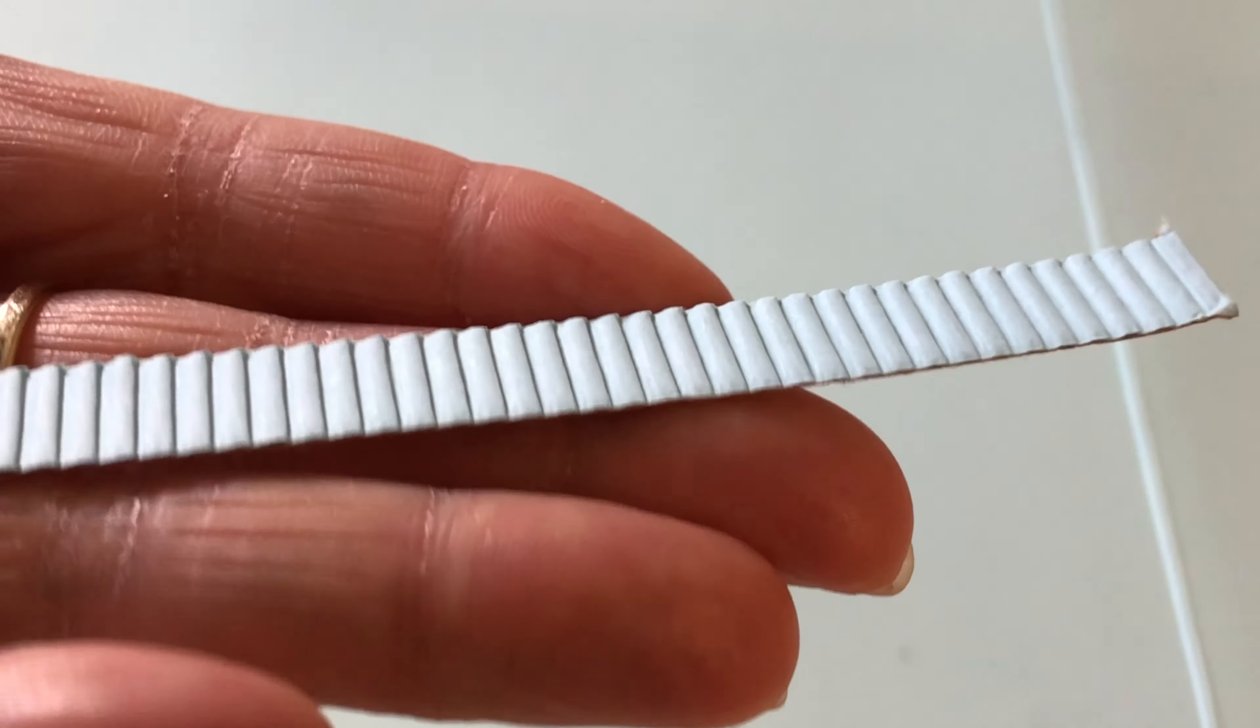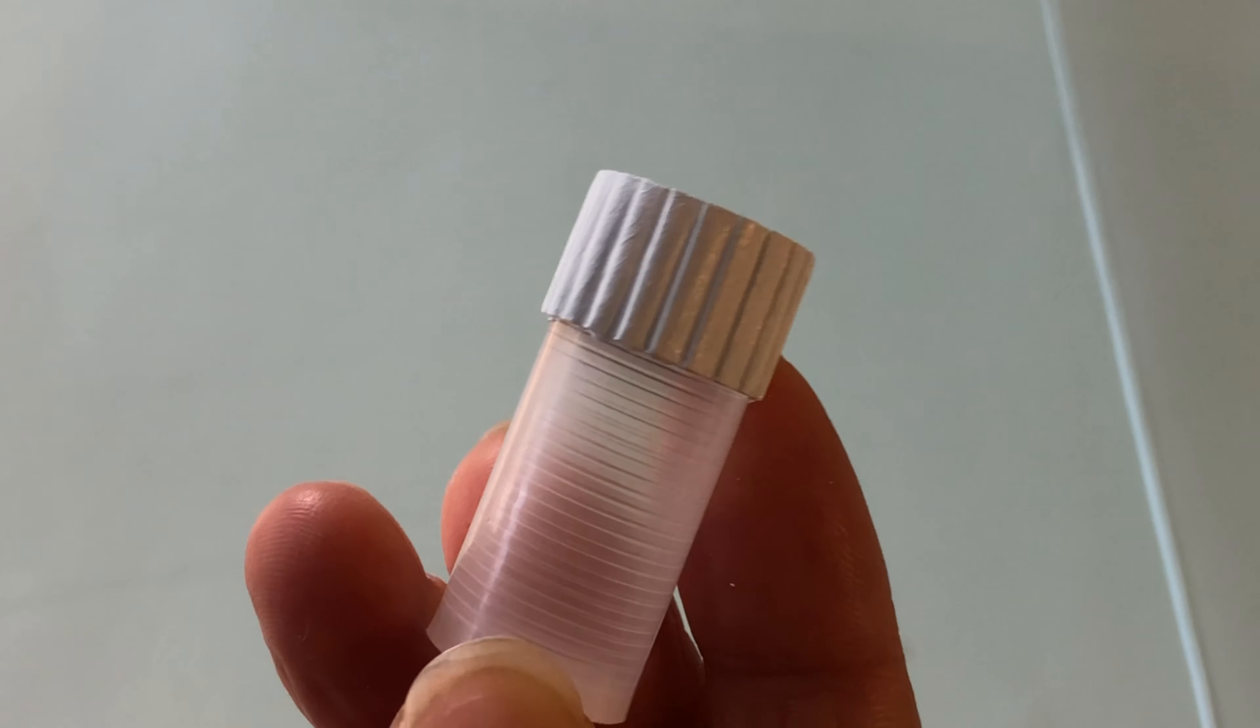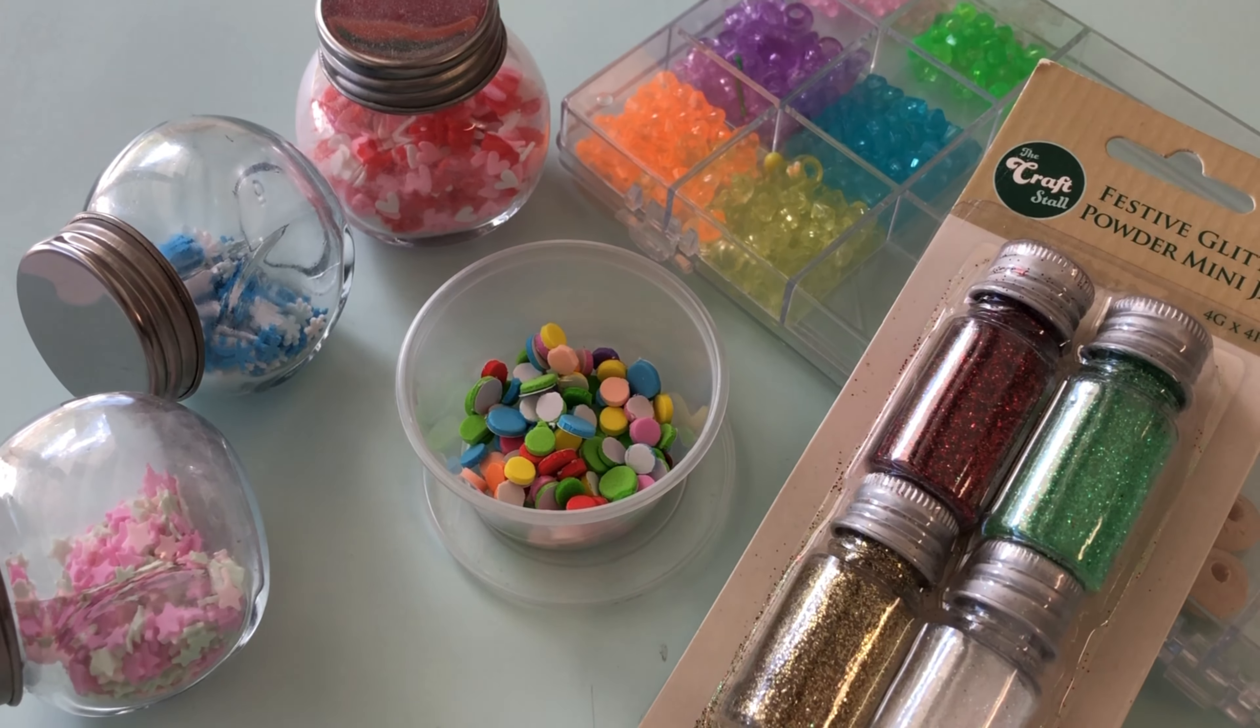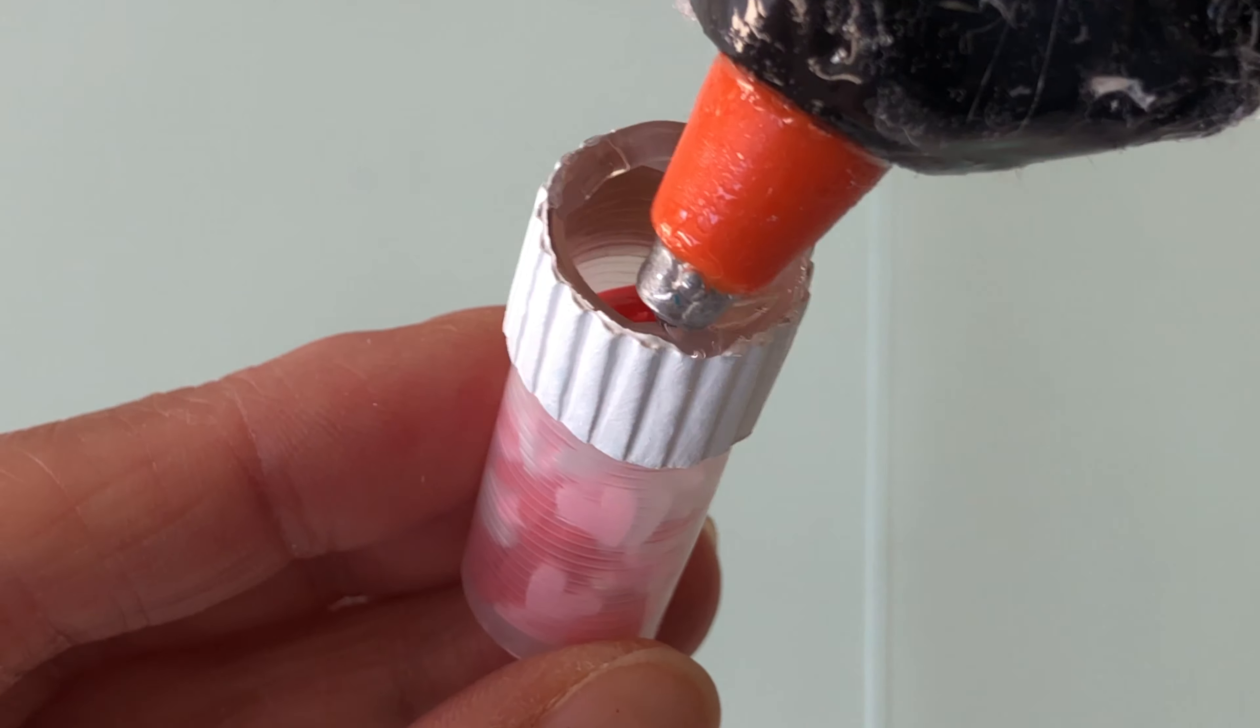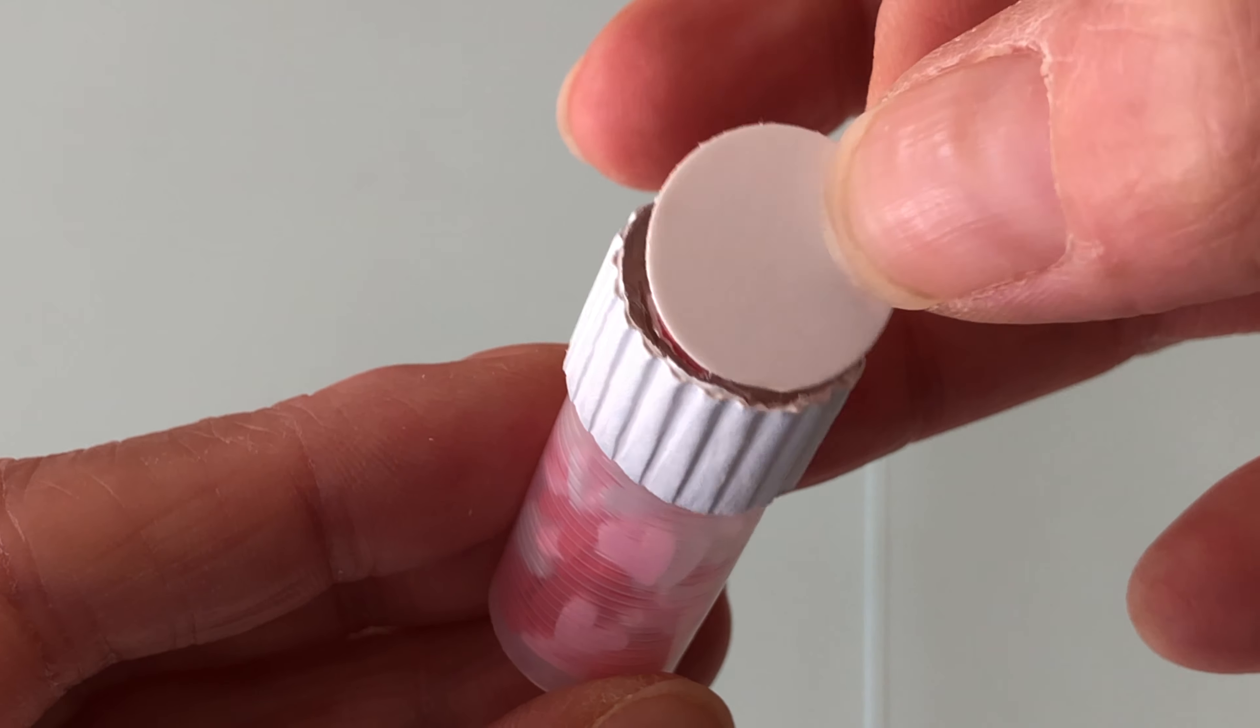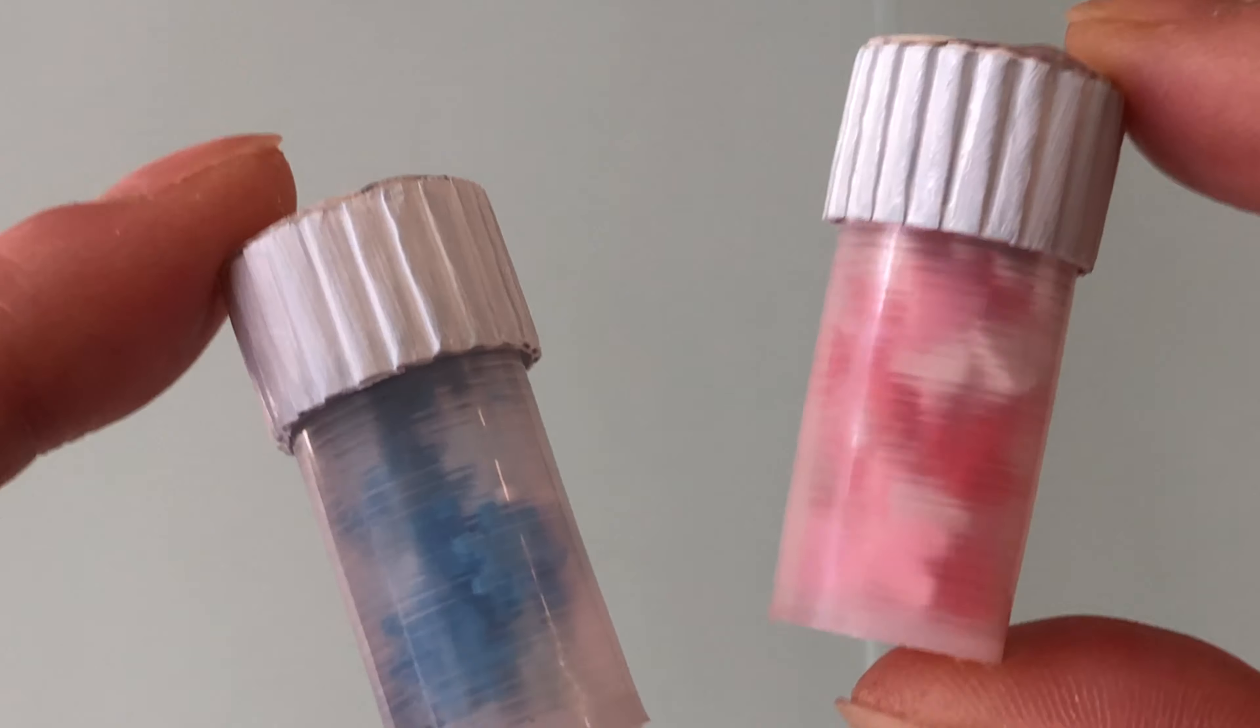Next, cut a 1 centimetre wide strip of specialty corrugated scrapbook paper. Wrap and glue around the top of the tube. Now we can fill our tube with small crafting beads, clay embellishments, sequins, glitter or even cut up pieces of craft foam. Put a line of hot glue around the rim and close the bottle with a circle of paperboard. Make more sprinkle jars to fill the kitchen cupboard.